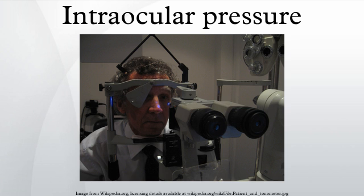Influencing factors — Daily variation: Intraocular pressure varies throughout the night and day. The diurnal variation for normal eyes is between 3 and 6 mmHg, and the variation may increase in glaucomatous eyes. During the night, intraocular pressure may not decrease despite the slower production of aqueous humor. In the general population, IOP ranges between 10 and 21 mmHg with a mean of about 15 or 16 mmHg.